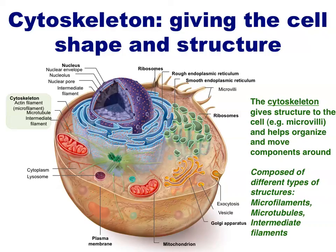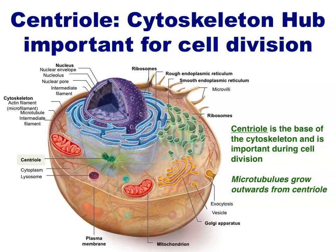The cytoskeleton can move the plasma membrane inwards for exocytosis, and can also move the membrane outwards to make projections known as microvilli. These cytoskeleton cables — in particular the microtubules — originate in the cell at the centriole. The centriole is the base of the cytoskeleton. If microtubules are like railroad lines in the cell, the centriole is the terminus station or the rail yard. This organelle is particularly important during cell division, as one centriole is found on each end of the cell to help pull or separate materials to each side.